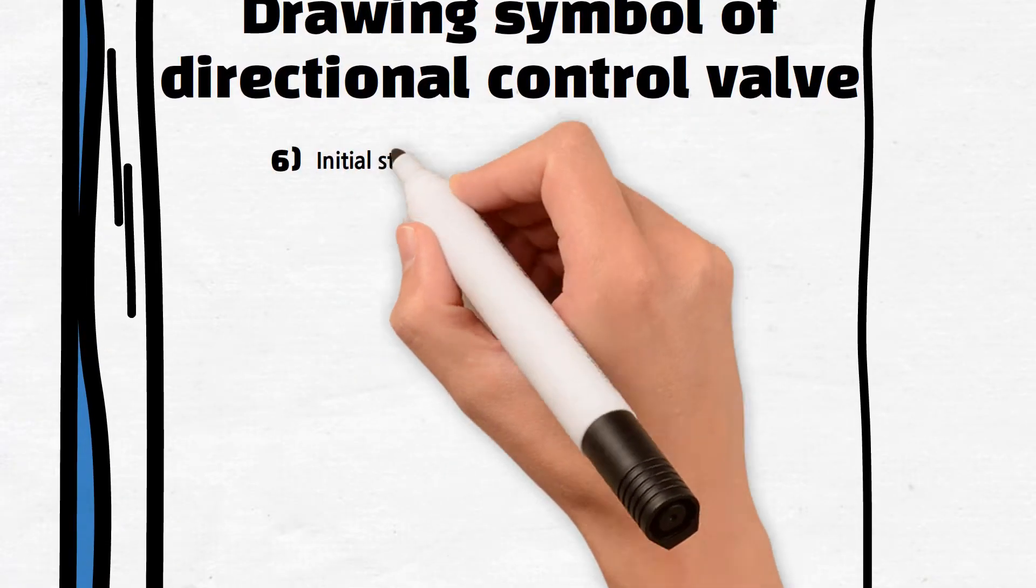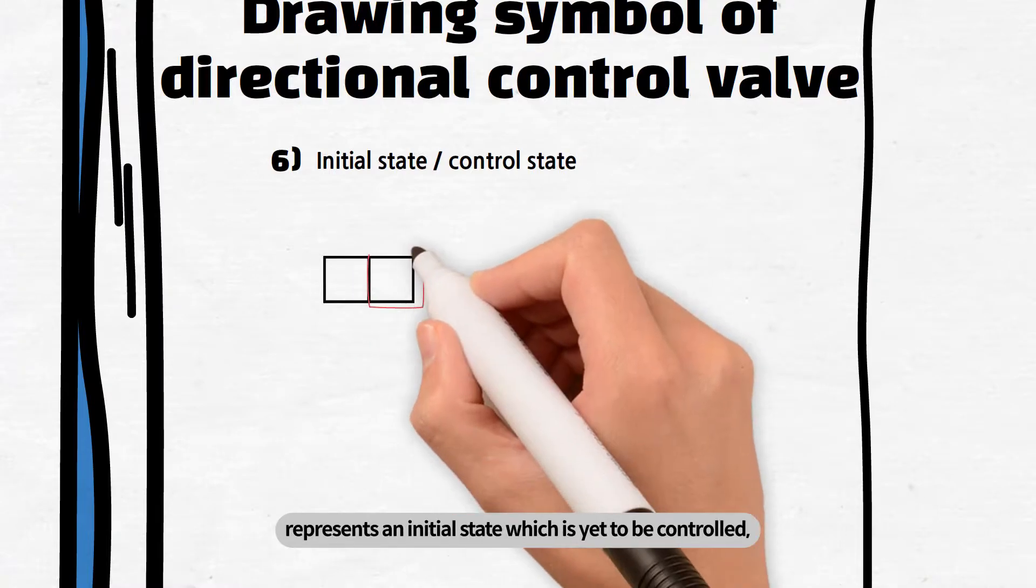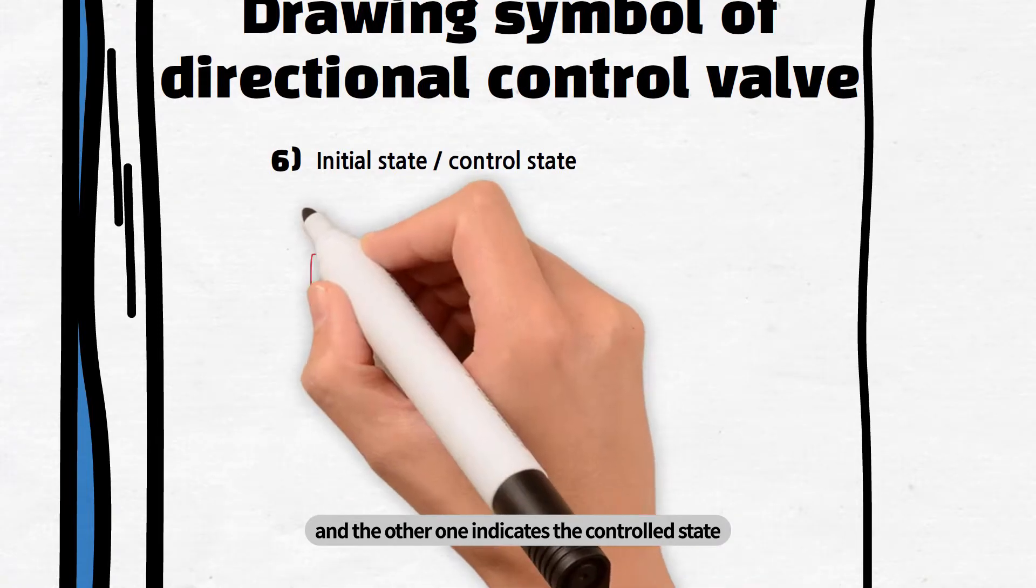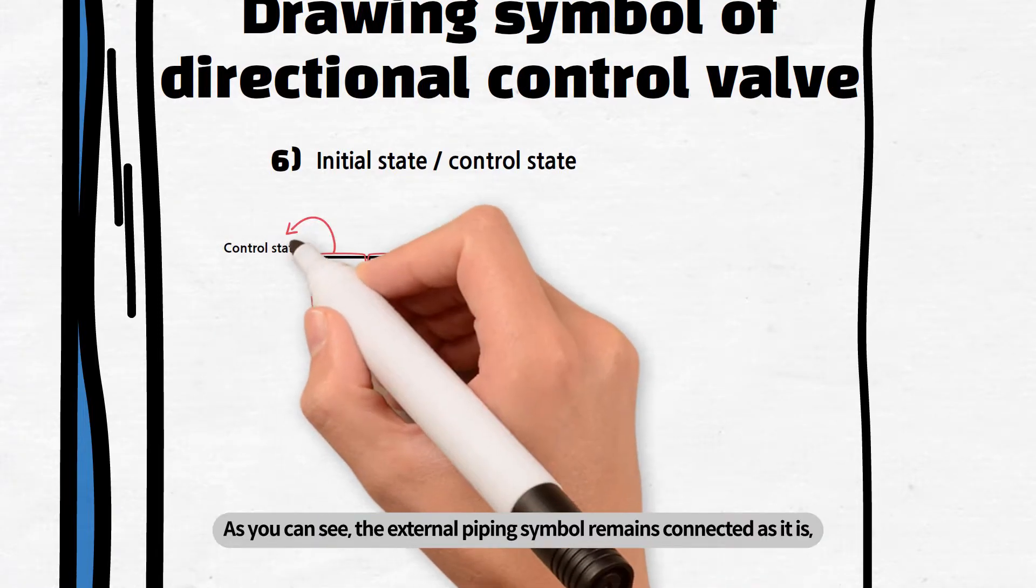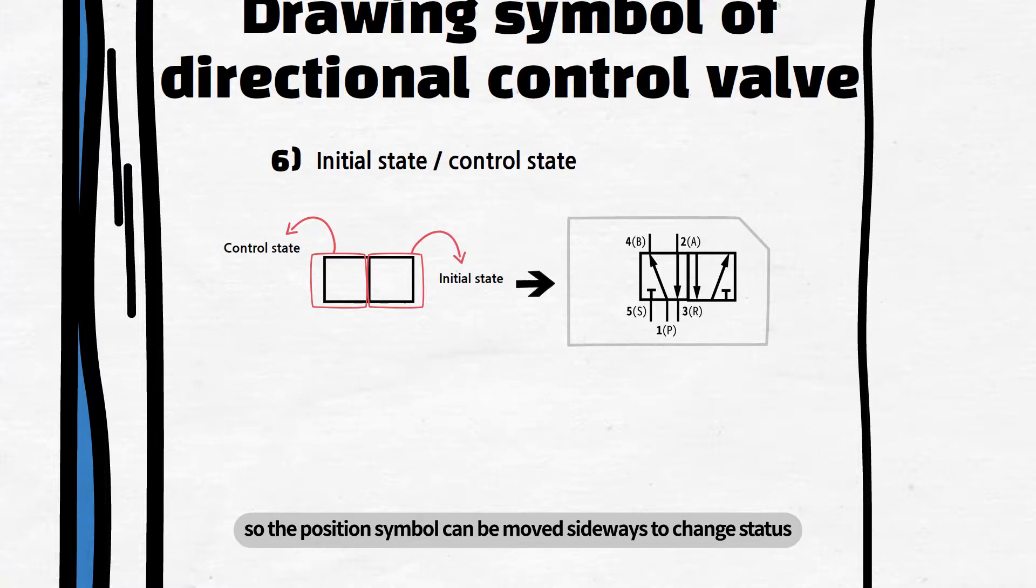Sixth. One of the attached control valve position symbols represents an initial state which is yet to be controlled, and the other one indicates the controlled state. As you can see, the external piping symbol remains connected as it is, so the position symbol can be moved sideways to change status.